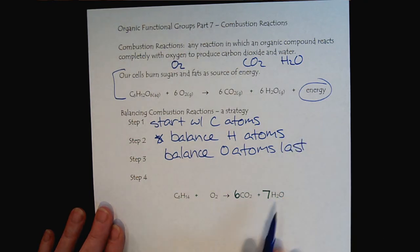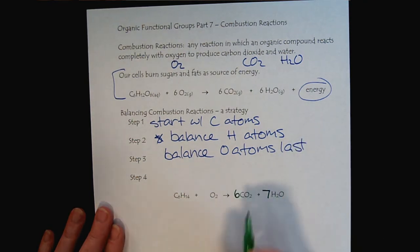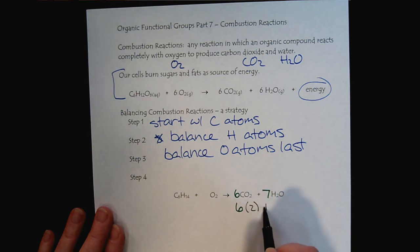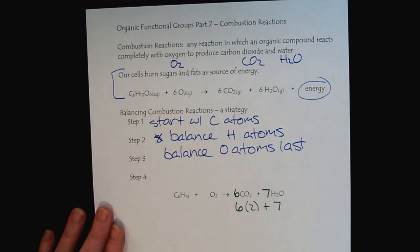When we look to the right, we see that we have six carbon dioxides. Each of those carbon dioxides contains two oxygens. And then, we have seven water molecules, and each of those water molecules has one oxygen. So, all together, we would have 12 plus 7, we would have 19 oxygen atoms on the right.